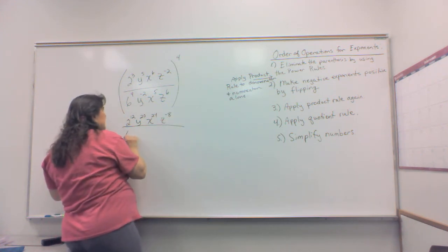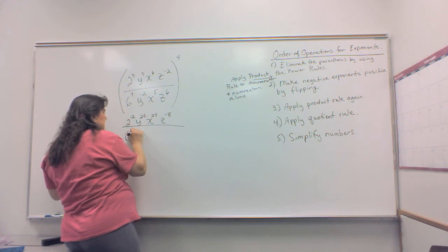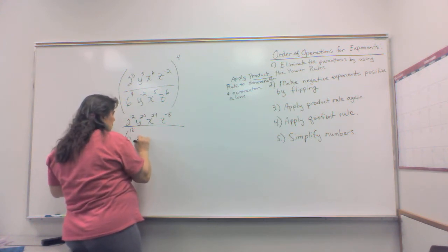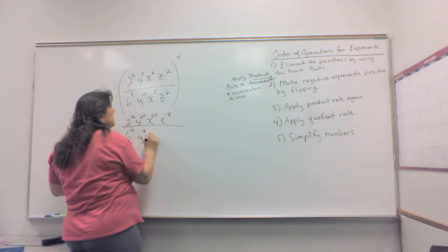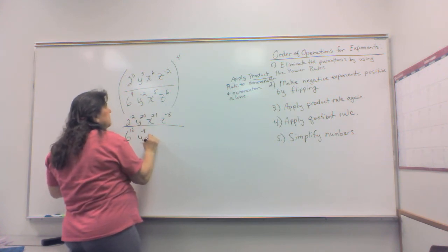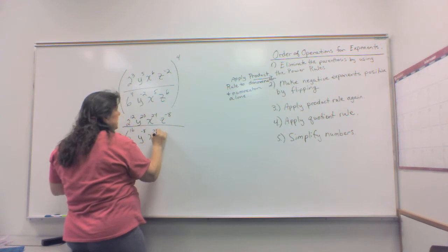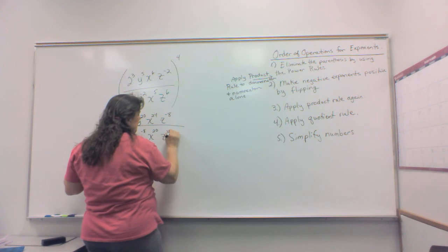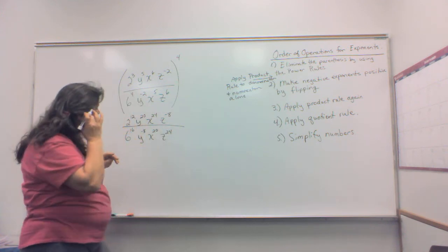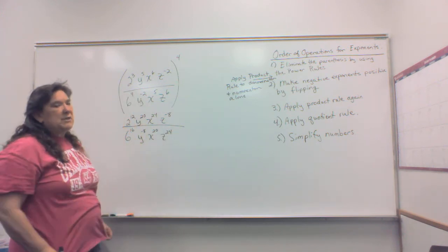Okay, and then I have six to the four times four, which is six to the negative two times four, which is negative eight. X to the five times four, which is 20. And Z to the six times four, which is 24. So as you can see, we've got some pretty big exponents there. We also have some negative exponents.